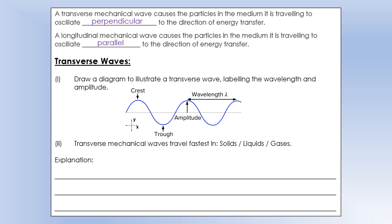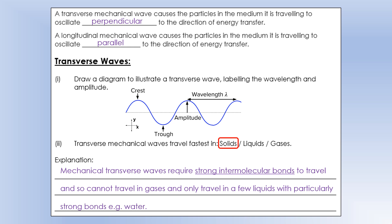So transverse mechanical waves travel fastest in solids, and the reason is that a mechanical transverse wave requires strong intermolecular bonds to travel, and that means they don't travel in gases, and there's only a couple of liquids like water that they can actually travel in. But that's why it works best in solids, that's where the strongest intermolecular bonds are.